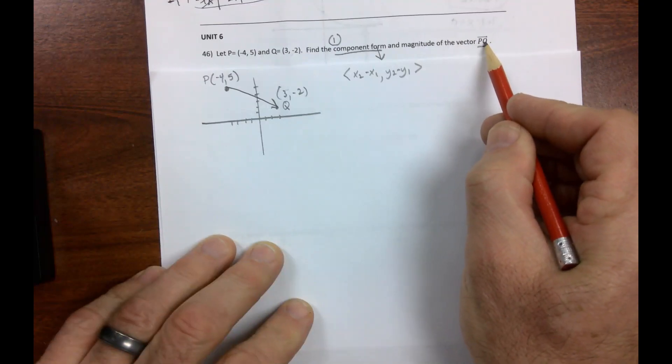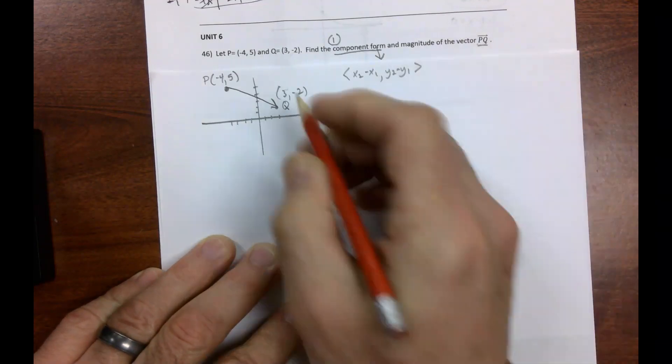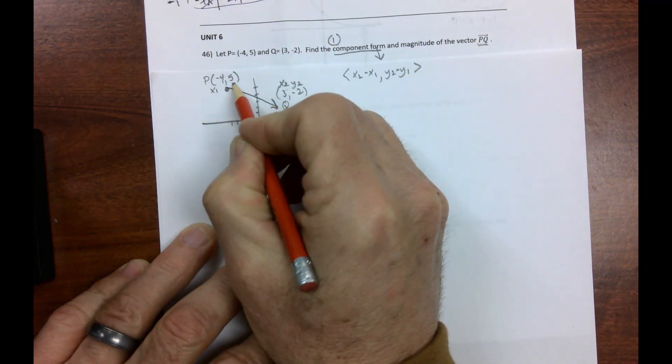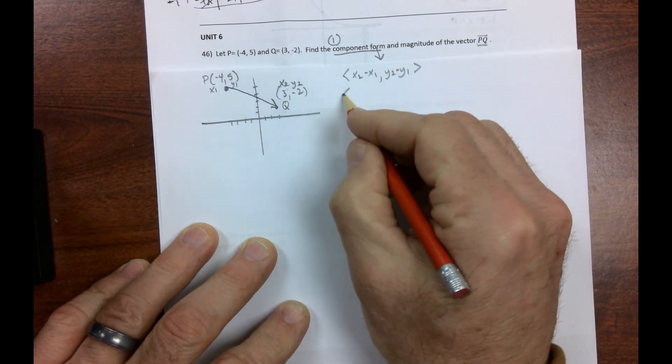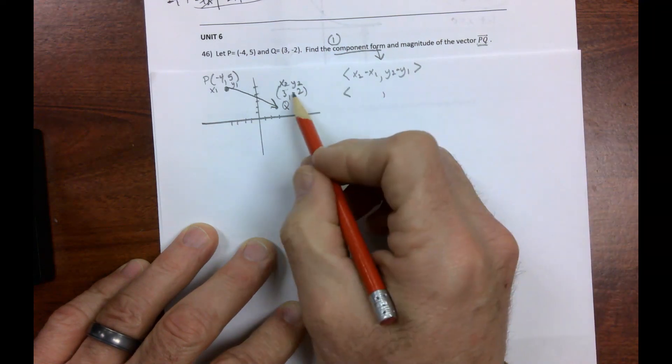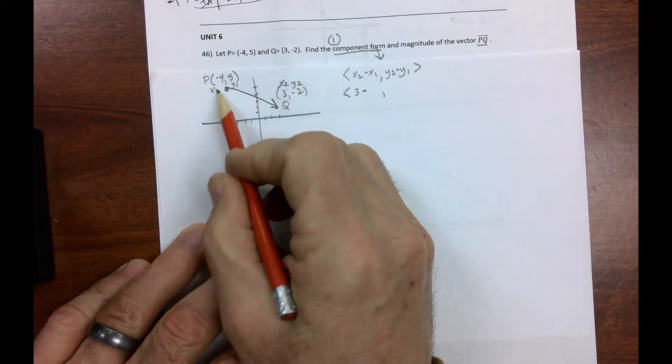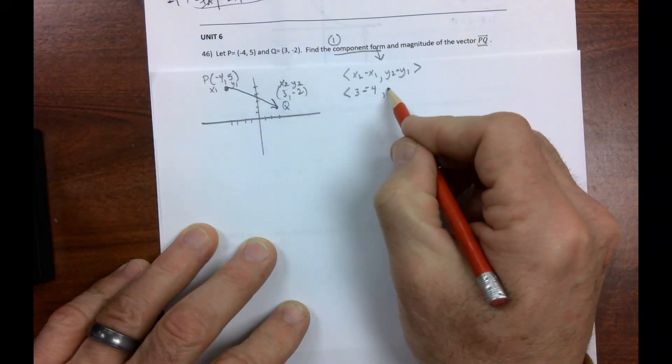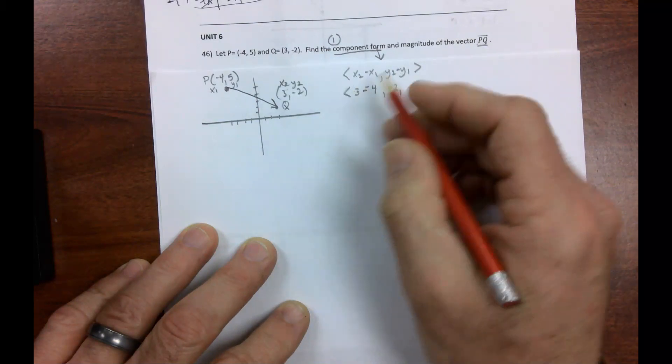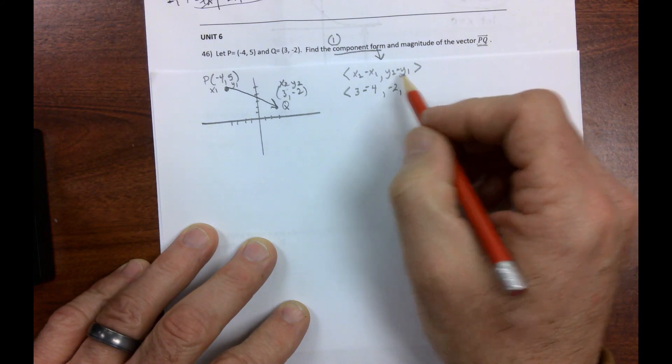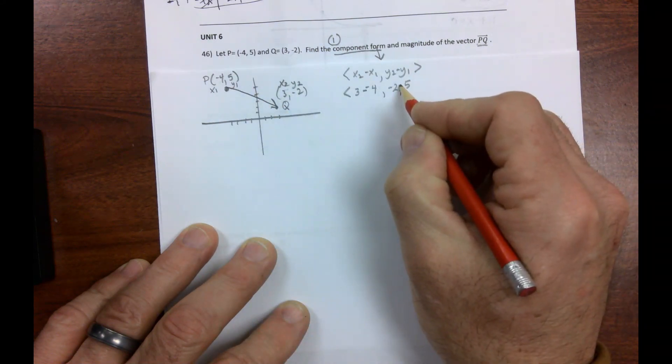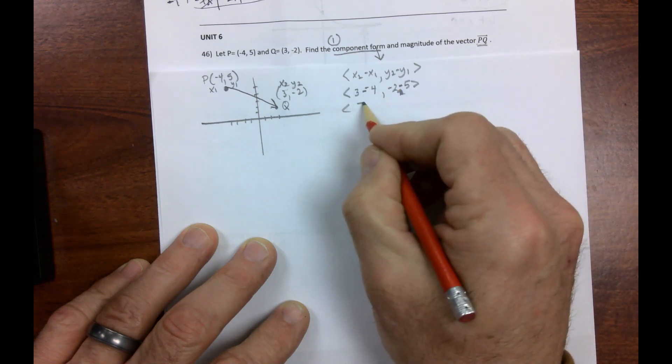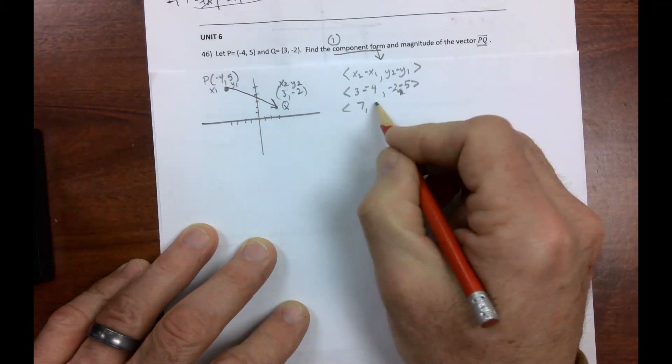Now remember, order matters. It starts at point P, goes to point Q. That means this is x2, y2, this is x1, y1, and when you use this formula, you have to be very careful of that order. So x2 is 3, x1 is negative 4, y2 is negative 2, and y1 is 5. So that's 3 plus 4, which is 7, and negative 2 minus 5, which is negative 7.